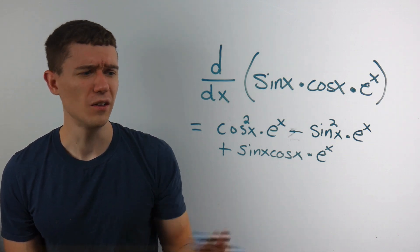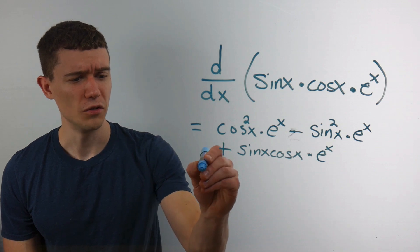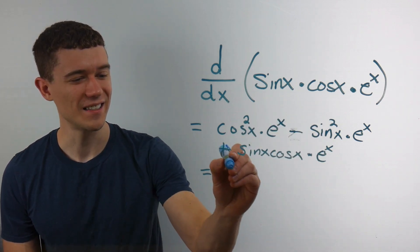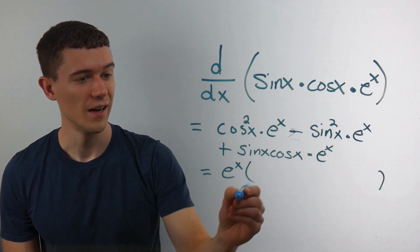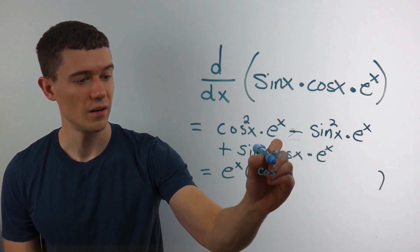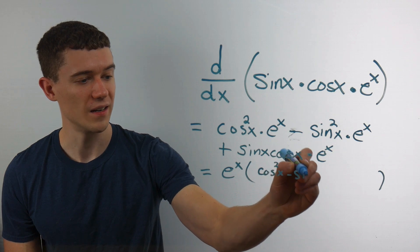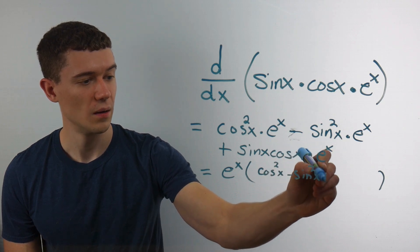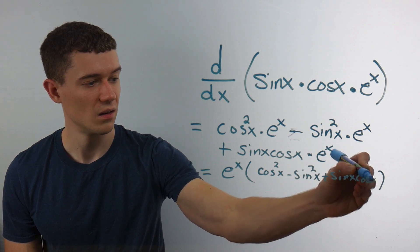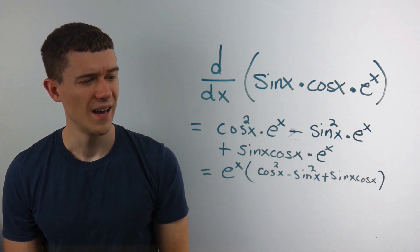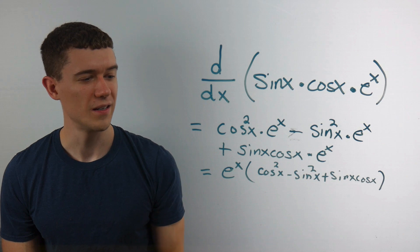Now, I guess we could clean this up. I mean, I don't really want to, but here we go. So there's an e to the x everywhere. I might as well factor that out. That's the greatest common factor. And then I've got cosine squared minus sine squared plus sine x cosine x and cosine squared minus sine squared.